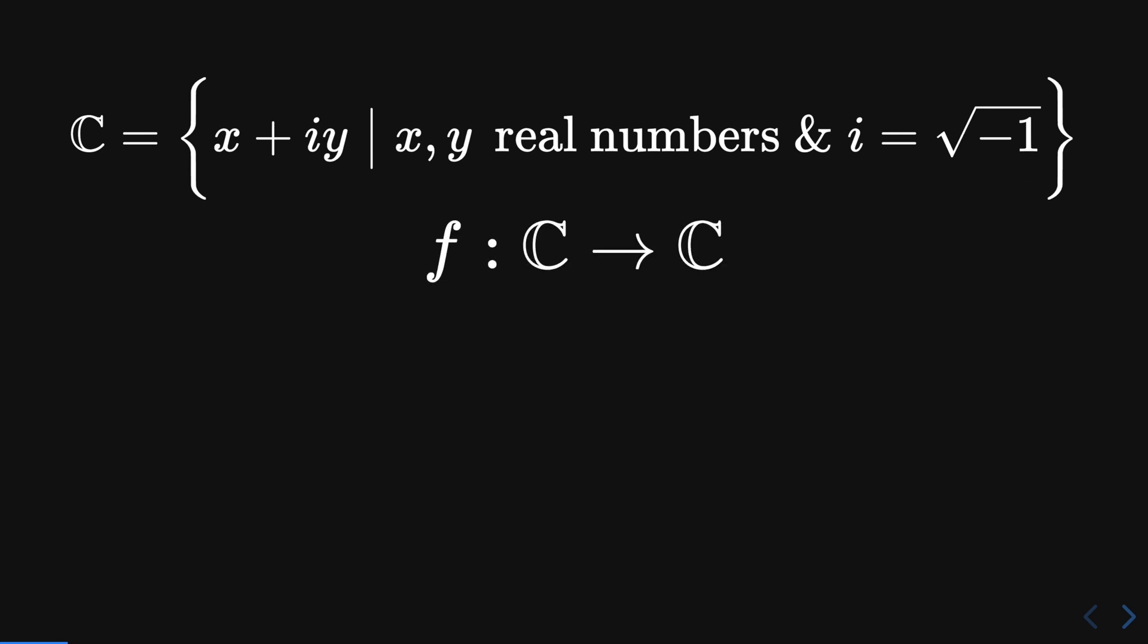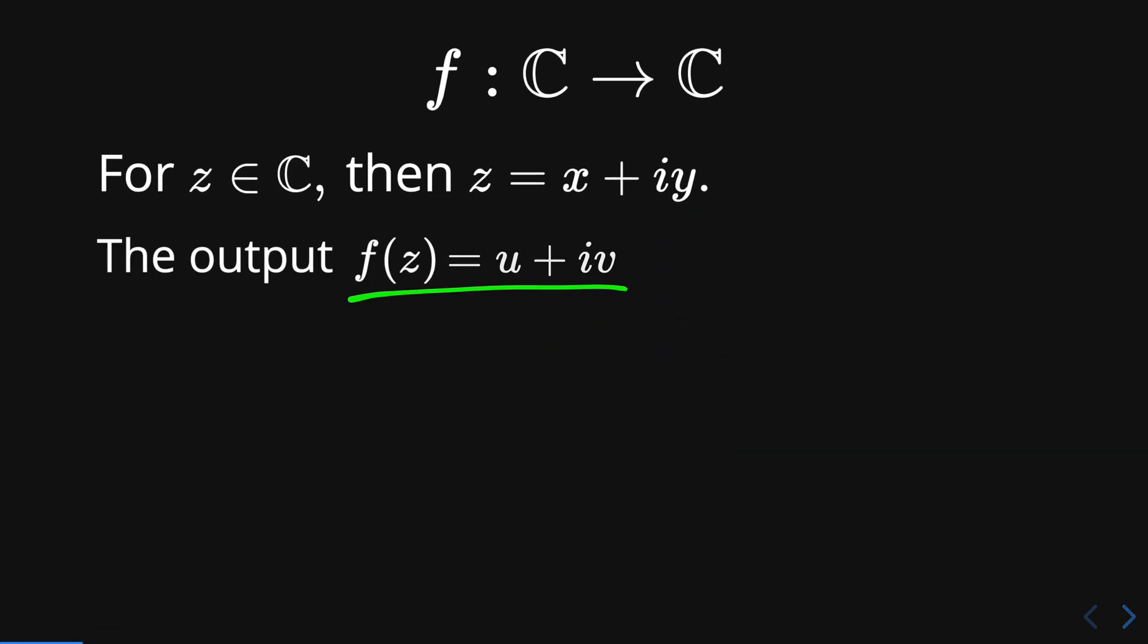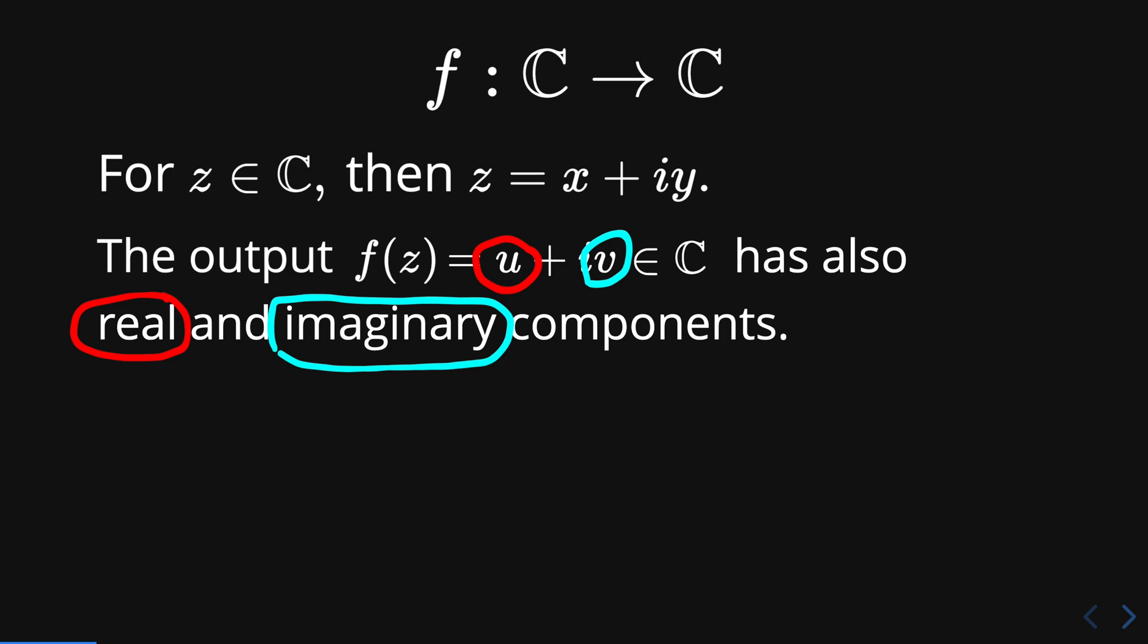For a function defined on the complex numbers we have that for z a complex number, z has real and imaginary components, and the output f evaluated at z to be equal to u plus i times v is also a complex number with real and imaginary components.